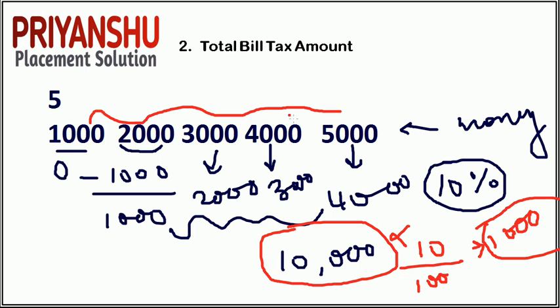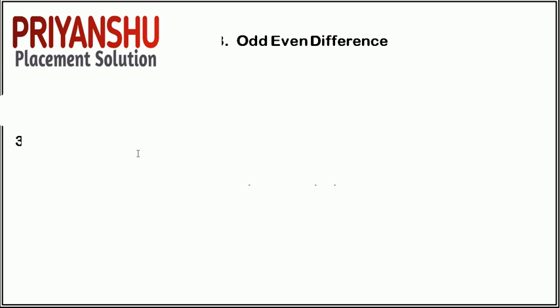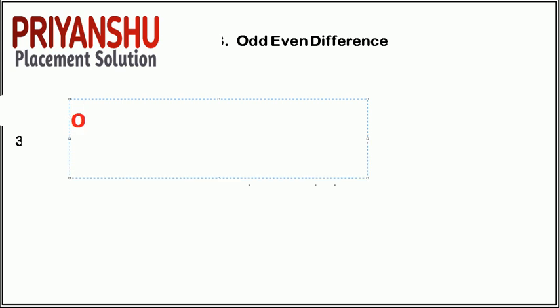The next question is odd-even difference. You need to find the sum of all odd numbers and the sum of all even numbers in the array, then compute: sum of odd numbers minus sum of even numbers. It is a very simple question — find the even numbers, find the odd numbers, sum them separately, then subtract even sum from odd sum.